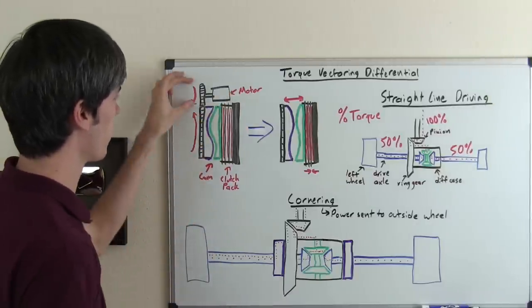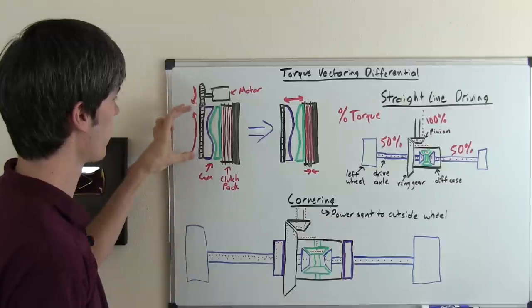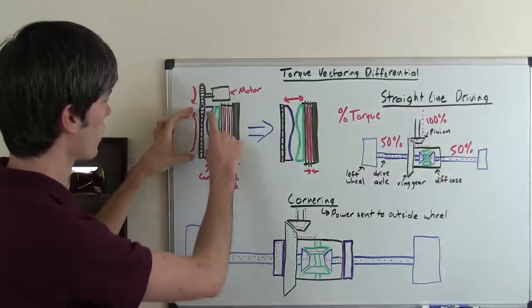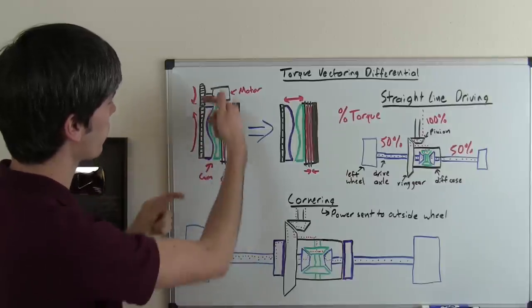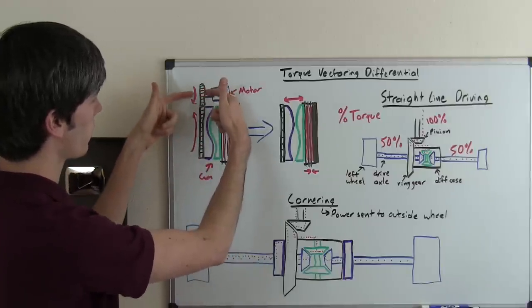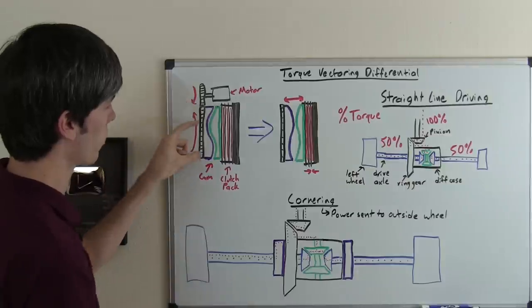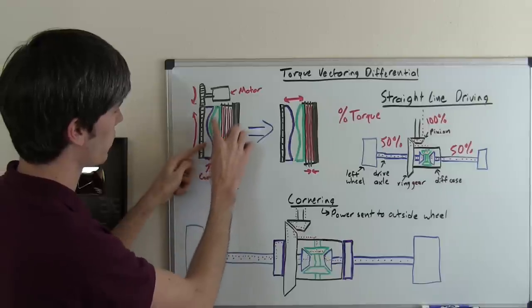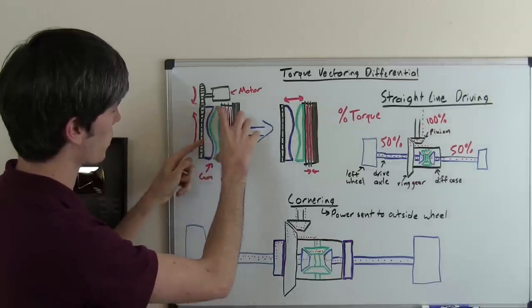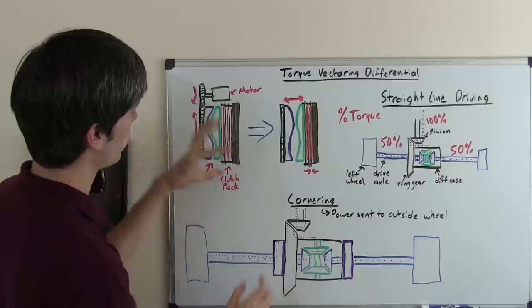And on the end of it you have this gear and so when this gear rotates it rotates this other gear which attached to it is this cam and so as this cam rotates this motor is going to rotate this gear up here that will rotate this gear rotating this cam and as that cam rotates you can see the shape of this will force it to press this green portion of the cam in.